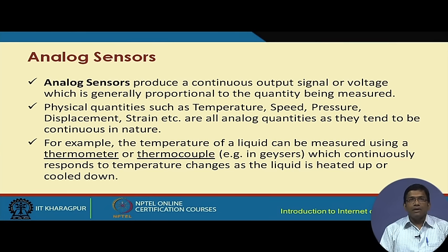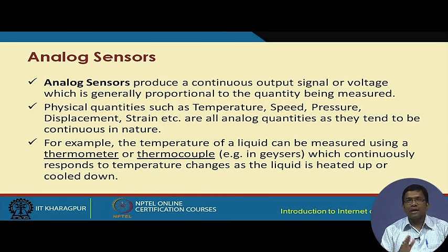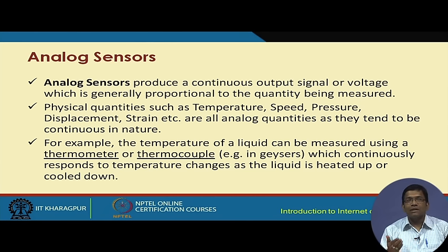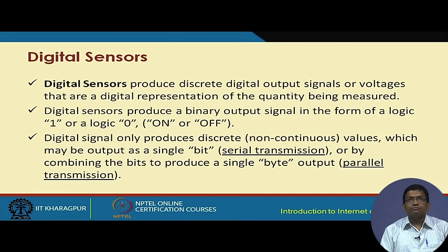Temperature is typically measured with a thermometer or thermocouple. Thermometers are common, but thermocouples — which use two different metallic strips that bend — are used in geysers, for example. Based on the amount of bending, the change in temperature is measured. Digital sensors produce discrete voltage levels; binary values like zero and one, or on and off, are the outputs of digital sensors.